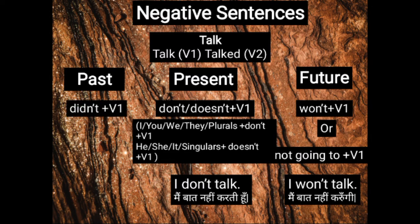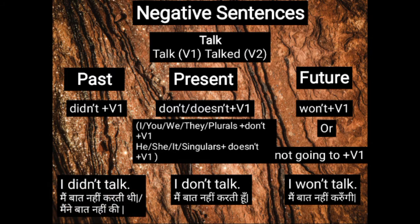In the past tense, we use DIDN'T — that is the contracted form of DID NOT. DIDN'T plus V1 will make your negative sentence. For example, I DIDN'T TALK — MAIN BAAT NAHIN KARTHI. As we know, there are two meanings of the same sentence in Hindi.